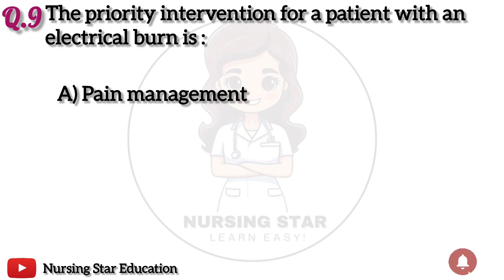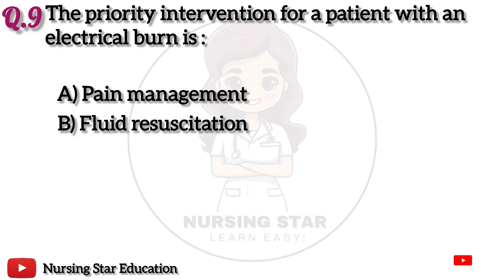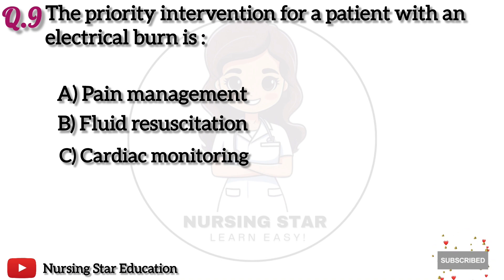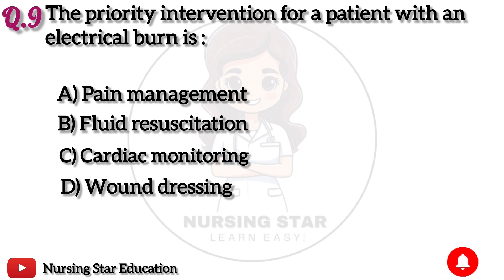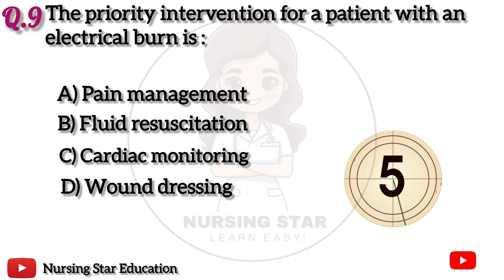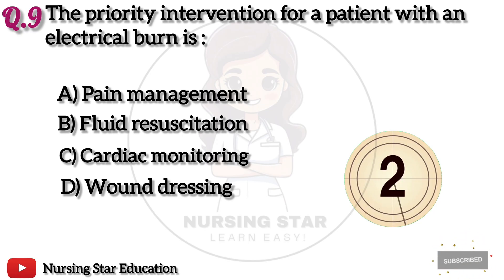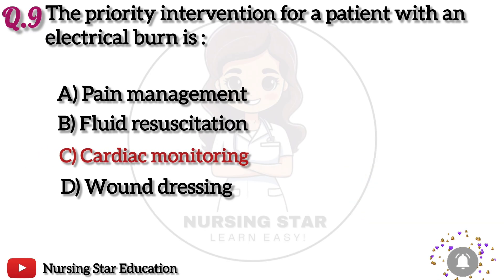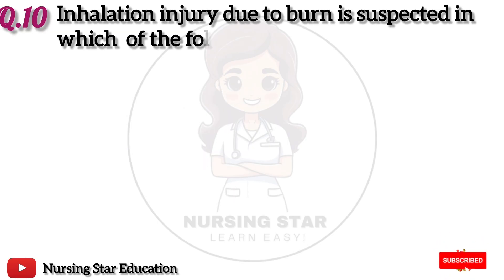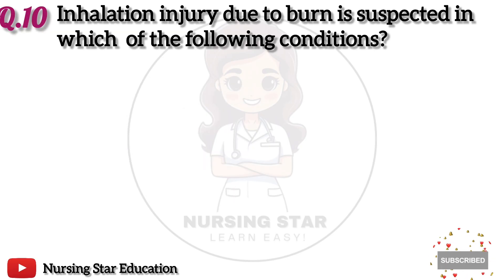Question 9: The priority intervention for a patient with an electrical burn is. Option A: Pain management. B: Fluid resuscitation. C: Cardiac monitoring. D: Wound dressing. The correct answer is C: Cardiac monitoring.